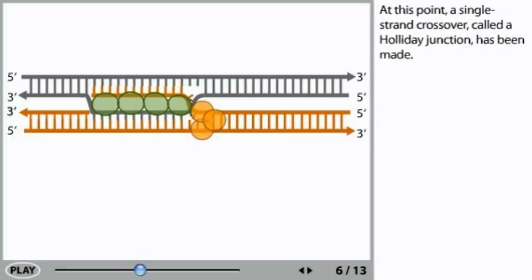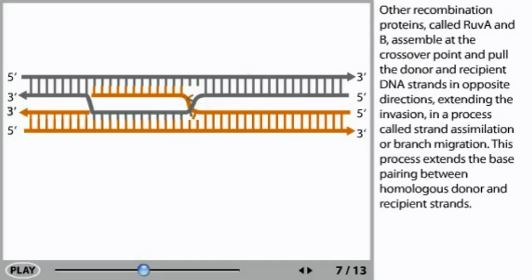At this point, a single-strand crossover called a holiday junction has been made. Other recombination proteins called RuvA and B assemble at the crossover point and pull the donor and recipient DNA strands in opposite directions.